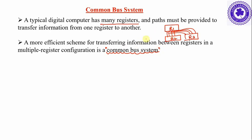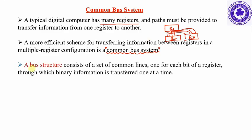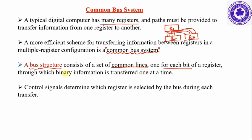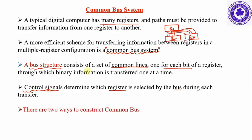A common bus system means all registers are connected to the common bus so that communication is possible. A bus structure consists of a set of common lines, one for each bit of a register. If there are n bits, you design an n-bit common bus through which binary information is transferred. It requires control signals to determine which register is selected by the bus, because if n registers are present, we need to know which register places its information onto the common bus.